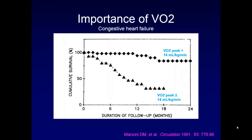This is a study done by Mancini in Circulation in 1991. They measured VO2 peak in the presence of disease and determined a cutoff to identify who does well versus poorly. Looking at survival at 24 months with a VO2 peak cutoff of about 14 mL/kg/min, cumulative survival for individuals above 14 was around 80% at two years, whereas those below 14 were much lower. This is why cardiologists use 14 mL/kg/min as the cutoff to determine transplant eligibility.